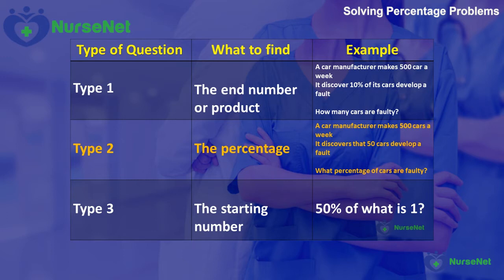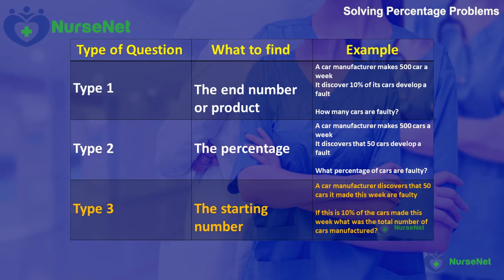And a Type 3 question: a car manufacturer discovers that 50 cars made this week are faulty. If this is 10% of the cars made this week, what was the total number of cars the car manufacturer made? We're missing the starting number — the total number of cars made — which in this case was 500.